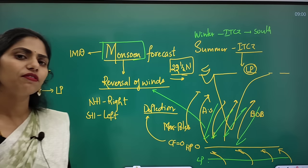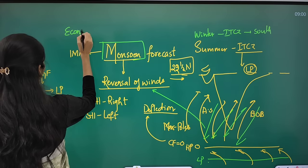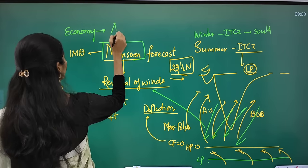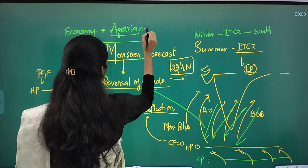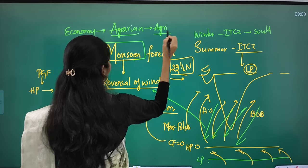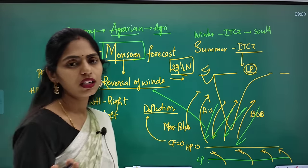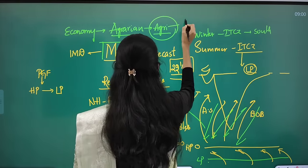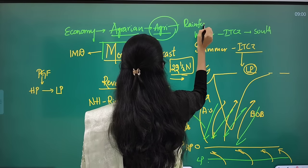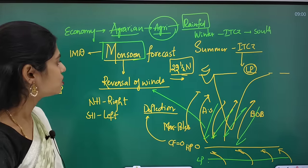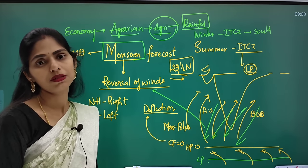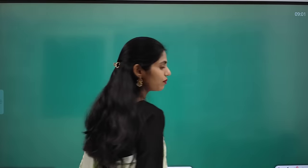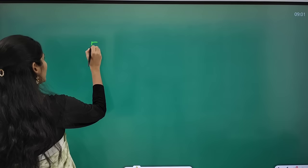Why is monsoon important for India? From an economy point of view, the Indian economy is called an agrarian economy — it depends upon agriculture. Agriculture is a primary activity in India. The problem is there is no proper irrigation infrastructure, so most agriculture in India depends upon rainfall — we call it rain-fed agriculture. Because of this, rainfall is very important and rainfall estimates are critical for proper policy making by the government.